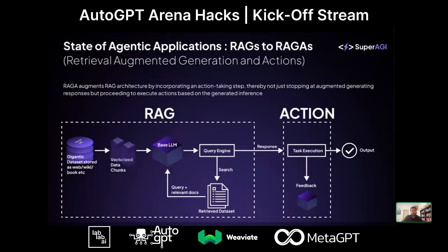Right now, if you look at the state of agentic applications, there has been a lot of buzz around RAG, or Retrieval Augmented Generation, which is clearly one use case that has been deployed in enterprise and production. But we think the market is moving more towards what we call RAG plus Actions — it has all the best of RAG but combines actions along with that. You have vectorized data, use the base LLM for augmented generation, and couple that with an action. A lot of large enterprises are deploying that into production.